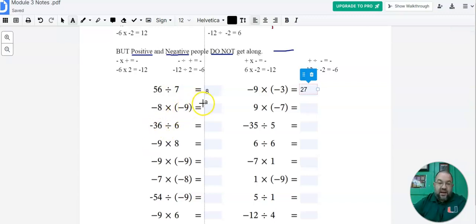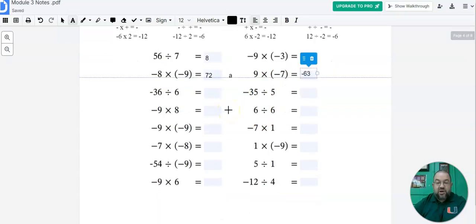And I can keep on doing this. Again, a negative times a negative is always going to be positive. So in this case, 8 times 9 we know is 72. And then of course, we have something new here. Now we have a positive and a negative. Remember, positive and negative doesn't get along. So the answer is going to be negative. And then we have negative 63 because 9 times 7 is 63. Pretty simple.